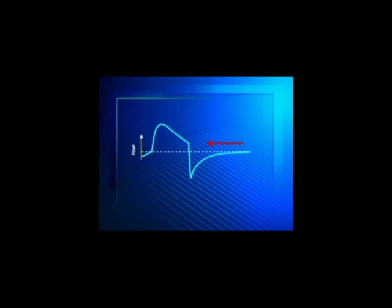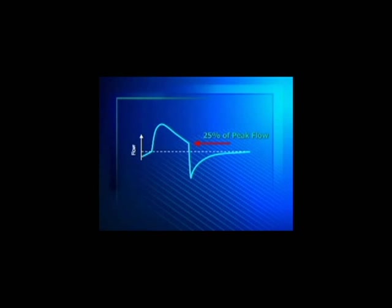Many conventional pressure support systems default to an expiratory threshold setting of 25 percent. It is important to remember that when designing pressure support, there was no physiological reason for choosing a 25 percent cycling off threshold. The old promise that this magic 25 percent number would allow patients to have freedom or good control over the machine inspiratory time is not true.